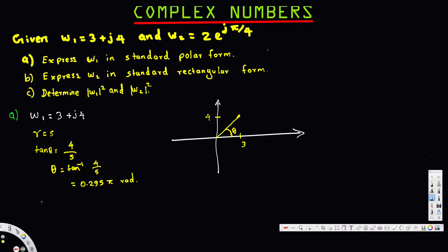Now we have both the distance and the angle, so we can express the complex number in polar form. w1 is equal to 5 e to the power j times 0.9255. That is the answer for the first question.